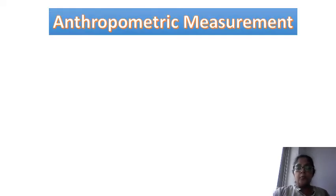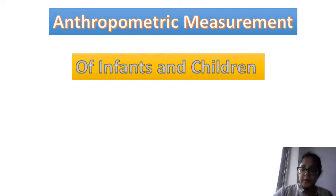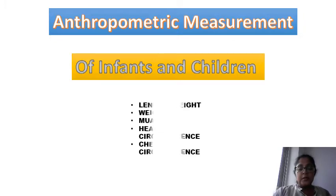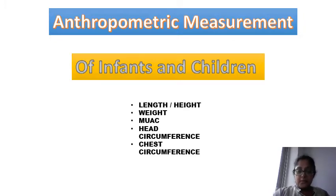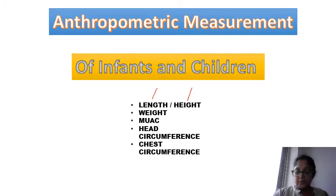Anthropometric measurements are different for children and infants compared to adults. Anthropometric measurements of infants and children include length or height calculation — length for infants who can't stand, and height for those who can stand — as well as weight calculation, MUAC (middle upper arm circumference), head circumference, and chest circumference.